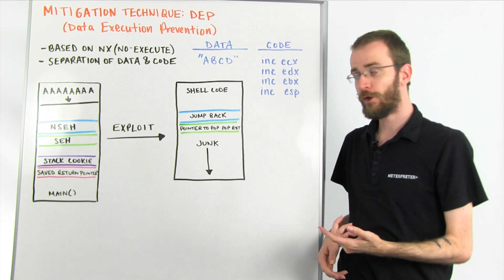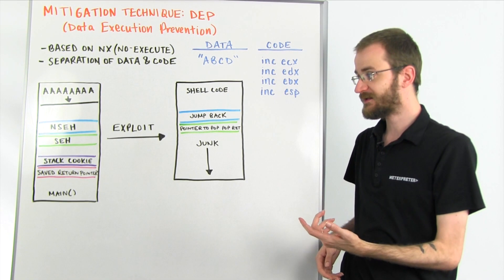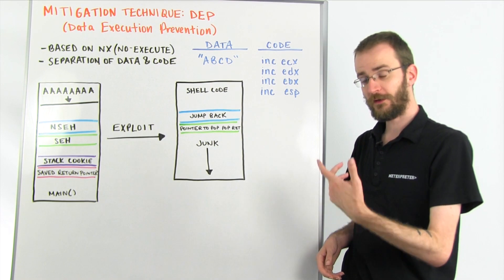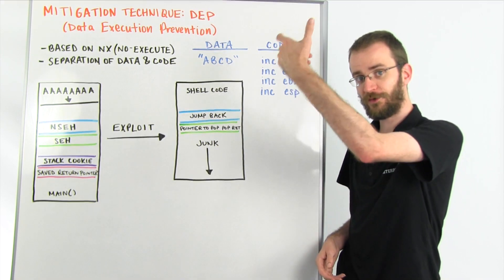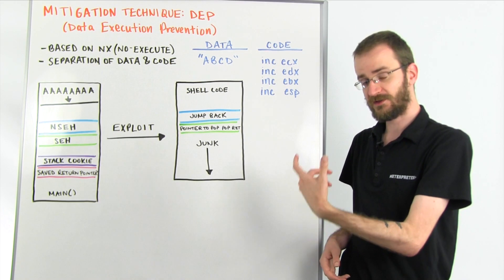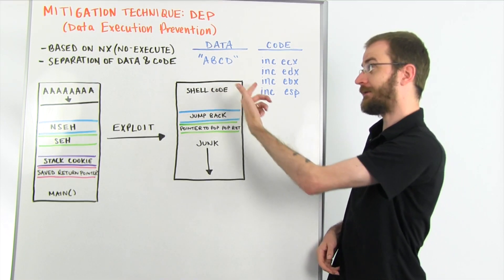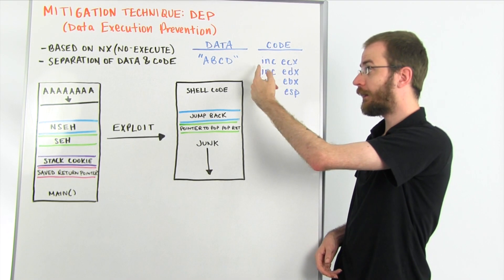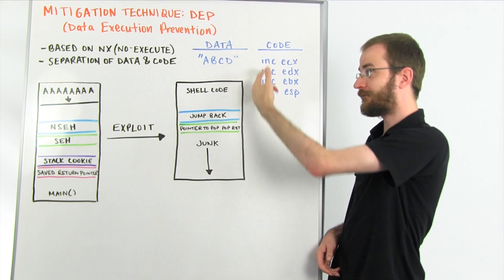When we talked about before when we would modify the stack in one of our exploits, that same data that we were sending was first interpreted as data, usually as a string, so your A, B, C, D. And then when we changed the execution, it's then interpreted instead as a set of instructions.